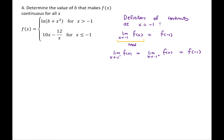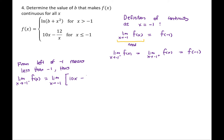Limit from the left of −1 means x less than −1, so we use the bottom piece of the piecewise function. Limit as x→−1⁻ of (10x − 12/x): plugging in −1 gives 10(−1) − 12/(−1) = −10+12 = 2. So the left limit is 2.